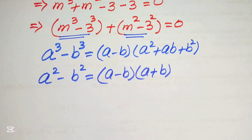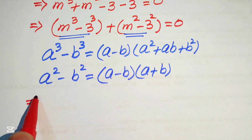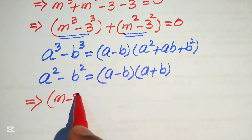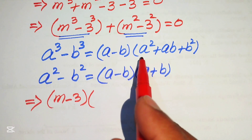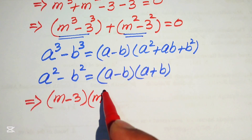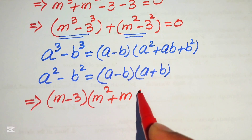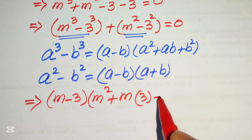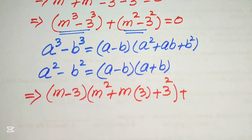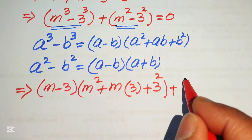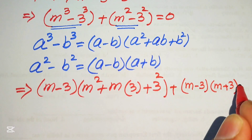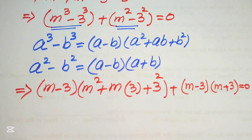First we apply the cubic formula on the first factor, where a is m and b is 3. So we write it as m minus 3 times m squared plus 3m plus 3 squared, plus m squared minus 3 squared written as m minus 3 times m plus 3, and this whole equals to 0.